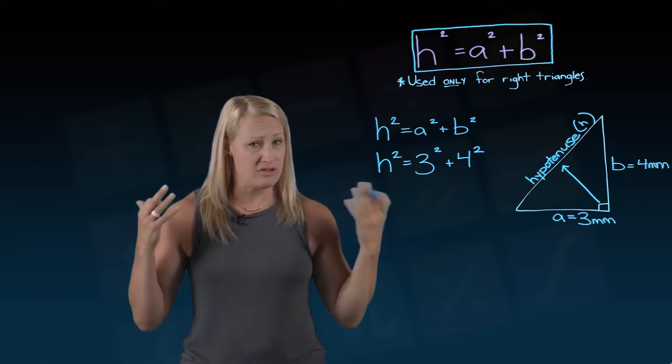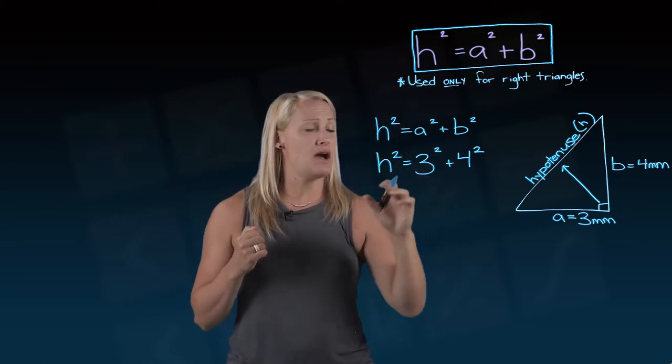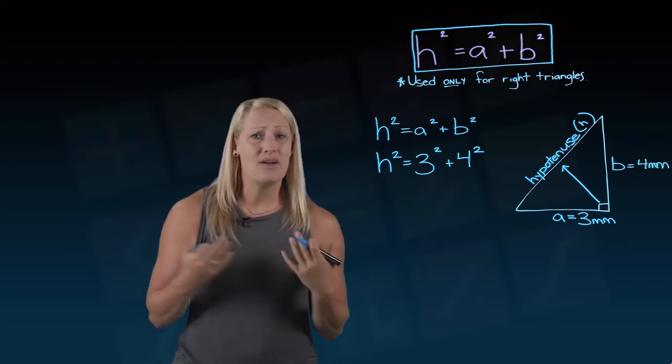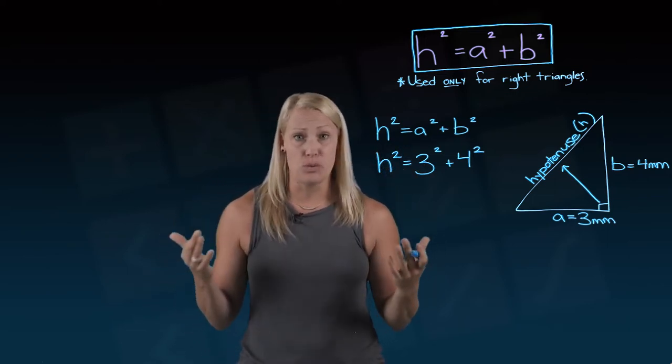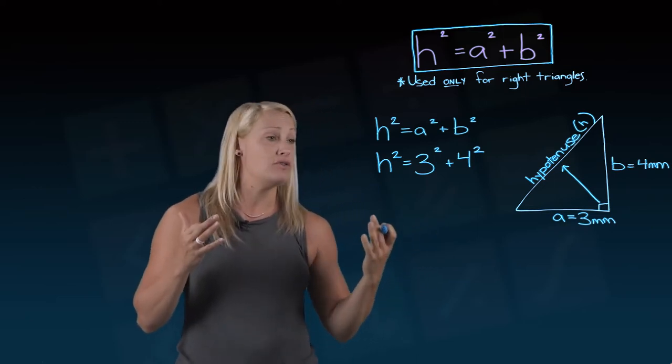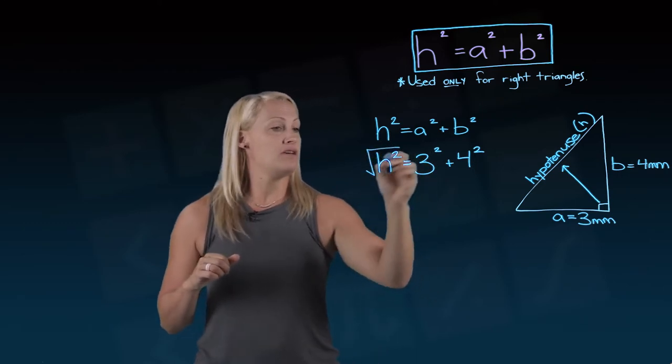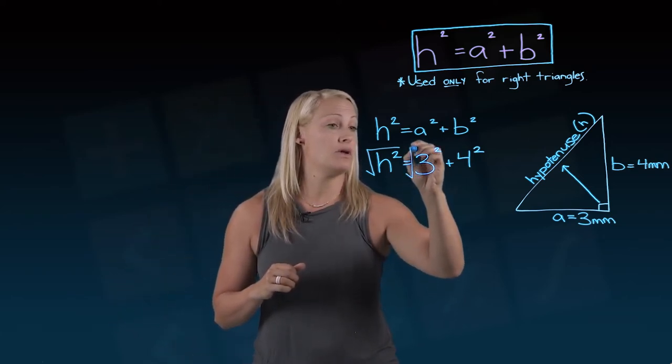Now if you want to, you can go ahead and square those numbers in your head or in your calculator. But something else that we need to talk about is that we've got a squared in front of our h. I don't want to know what the hypotenuse squared is. I want to know what the hypotenuse is. So the way that we're going to deal with that is we are going to take the square root of this h squared. And if you do something to one side of an equation, you've got to do the same to the other.